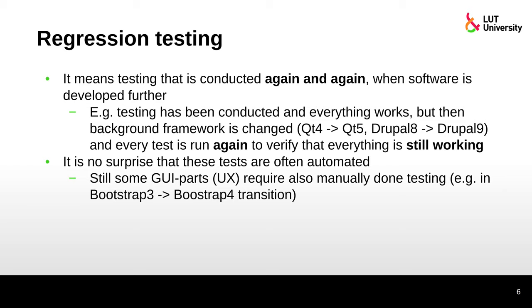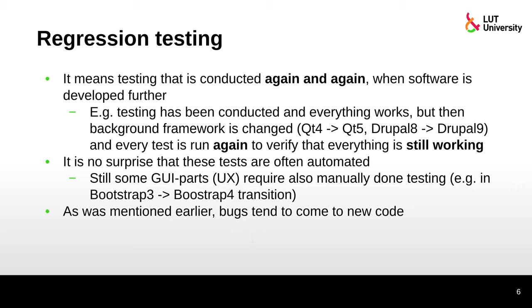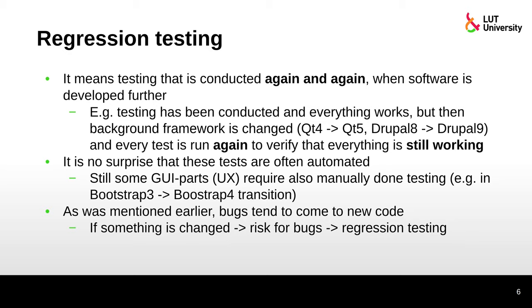For usability and user experience, manually done testing is still required. For example, if we are changing from Bootstrap 3 to Bootstrap 4 in a web page design, we need manual testing to see if the website still looks as intended. Bugs tend to appear in new code, so regression testing should be run on parts that haven't changed but are somehow related to new code. This can largely be done automatically.